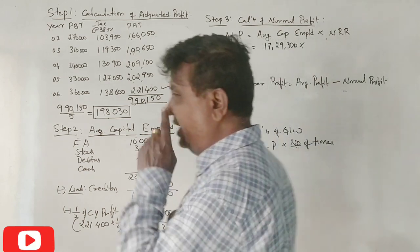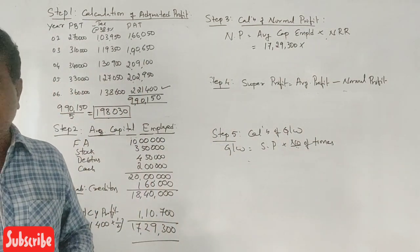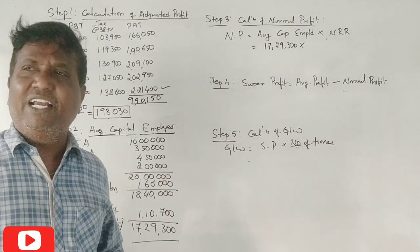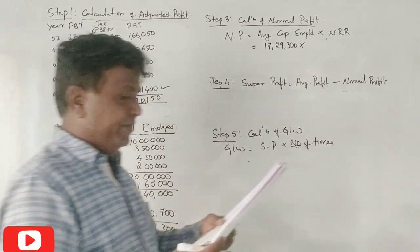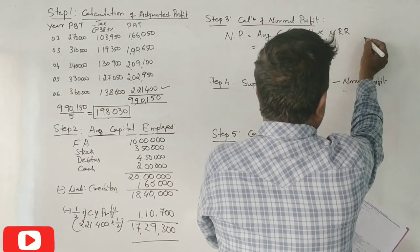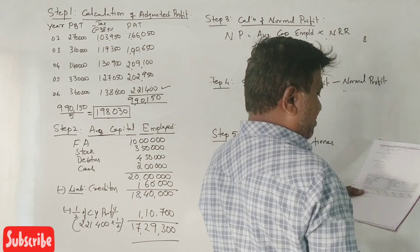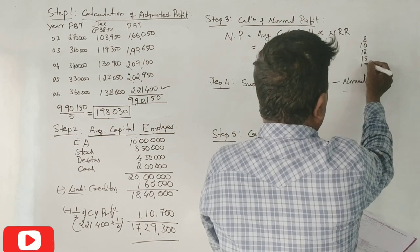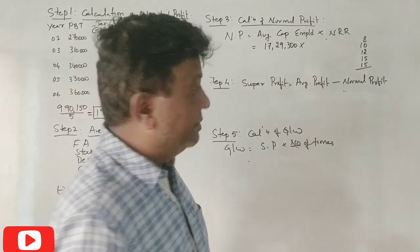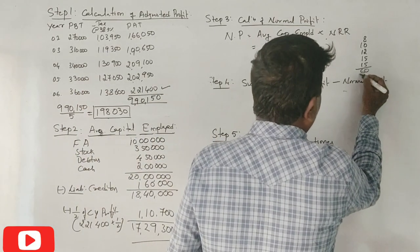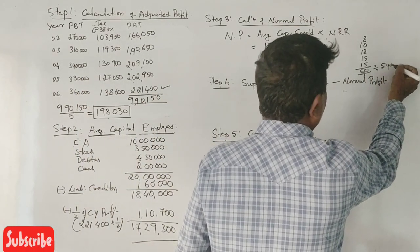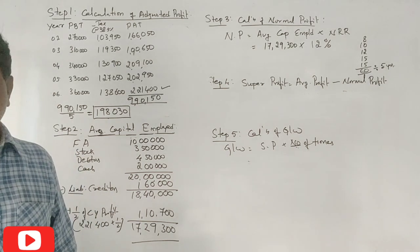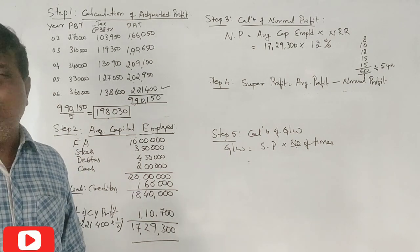Normal rate of return: How to calculate? From 5 years rate of dividend. Rate of dividend is profit percent. Add: 8 plus 10 plus 12 plus 15 plus 15 equals 60. Divide 60 by 5 years equals 12 percent average normal rate of return.